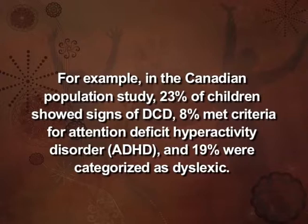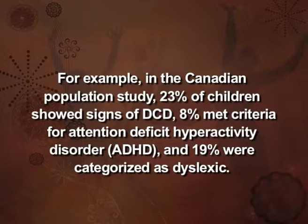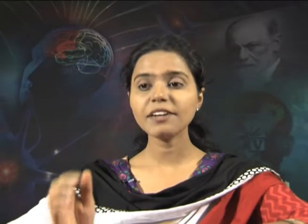This disorder is mostly observed in combination with other neurodevelopmental disorders. For example, in a Canadian population study, 23% of children showed signs of DCD, 8% met the criteria for attention deficit hyperactivity disorder, and 19% were categorized as dyslexic. Nearly 25% of affected children were found to have all three disorders, while 10% had both ADHD and DCD, and 22% had dyslexia and DCD.